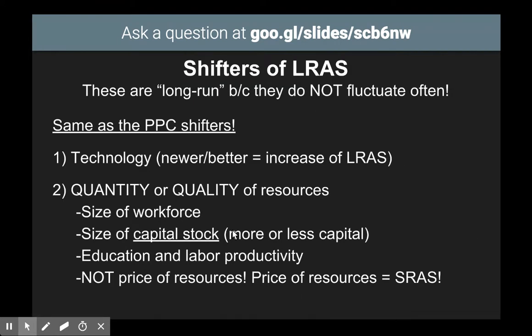Now LURAS — the totally vertical element of aggregate supply. These are called long run shifters because they do not necessarily fluctuate often and they have a long-term impact on production. The shifters for LURAS are the same as the shifters for the PPC. If there is newer or better technology, that means we can produce more things now and in the long run, so LURAS would shift to the right. It would be a decrease if for some reason we lost that technology.